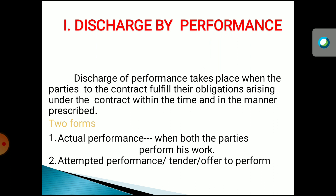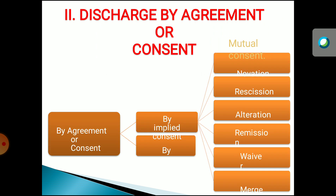Attempted performance is also called tender or offer to perform. The second mode of discharge of contract is discharge by agreement or consent. Between the consent and assent of the parties, by agreement they will discharge the contract.